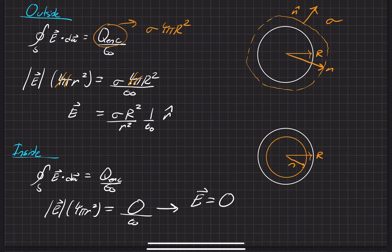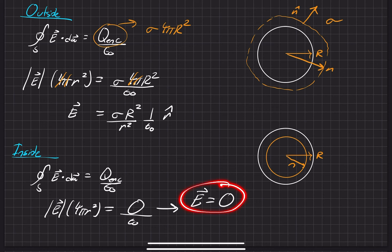That also makes sense in terms of Gauss's law. Now, if this was not a shell but a solid sphere with some sort of volumetric charge density on the inside, that would be a different story because then we would still have some charge density in the middle. But for this problem on the inside, it's always going to be zero for a shell. On the outside, it's going to be proportional to 1 over r squared, where r is the distance from the center of the sphere.